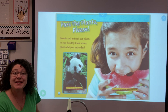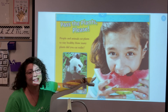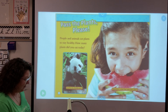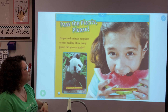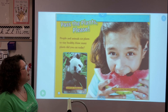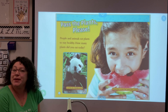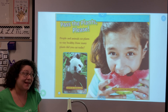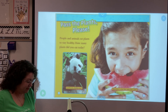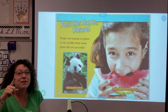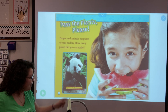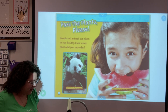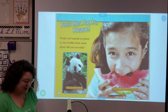Pass the plants please! Who likes watermelon? People and animals eat plants to stay healthy. How many plants did you eat today — how many fruits or vegetables? Maybe nothing yet, but maybe for dinner. A panda is eating a bamboo plant. Watermelon is a fruit that comes from a plant.